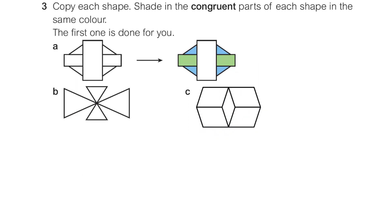Bearing that in mind, I would like you to copy each of these shapes down onto some paper and shade in the congruent parts in the same colour. If you've got a couple of different colours that will help. If not, just use different colouring techniques — maybe lines in one and dots in another. They've shown you for part A: the four blue triangles are congruent, the two green little rectangles are congruent, whereas the big rectangle in the middle has nothing else that's exactly the same size and shape, so that is not congruent to anything.